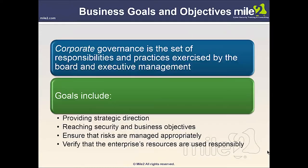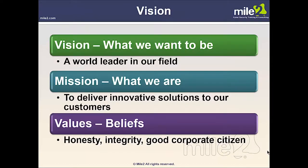Corporate governance looks at the goals and objectives of the business. The business decided to be in business because of the objectives they wish to accomplish. Corporate governance is a set of responsibilities and practices exercised by the board and executive management. These goals include providing strategic direction, reaching security and business objectives, ensuring risks are managed appropriately, and verifying that the enterprise's resources are used responsibly. A business also has a vision, a mission, and values.